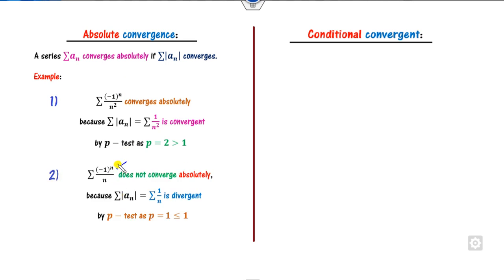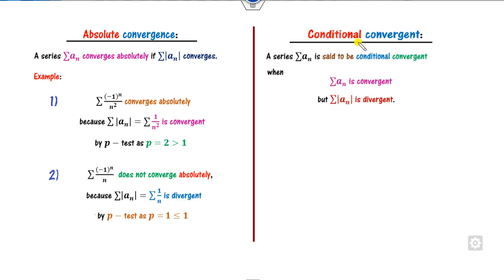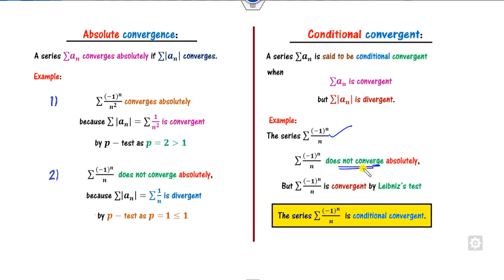Consider this example: the absolute value — since (-1)^n is always positive — gives 1/n, which is a divergent series by the p-test. Therefore, this infinite series does not converge absolutely. Once the series does not converge absolutely, we look at conditional convergence. Any series aₙ is said to be conditionally convergent if the original series is convergent but the absolute series is divergent. Here, this is a divergent absolute series, but since it is an alternating series, we can prove it is convergent using the Leibniz test. Here aₙ = 1/n satisfies all properties of the Leibniz test. Therefore, it is conditionally convergent.